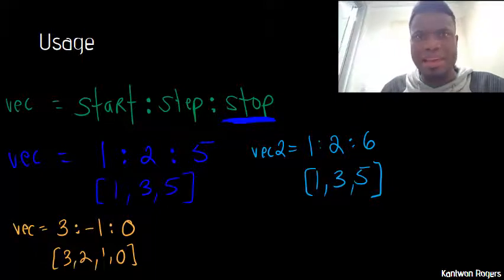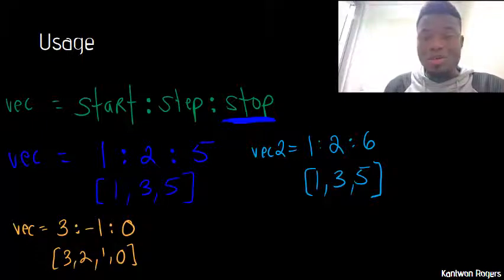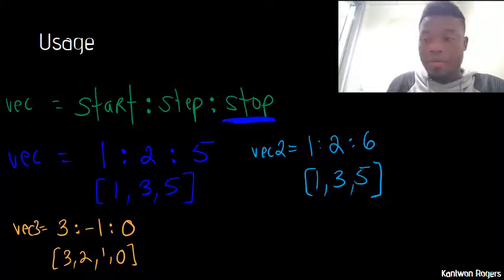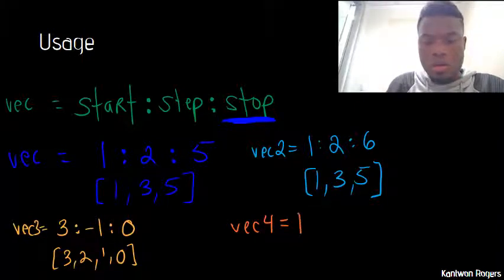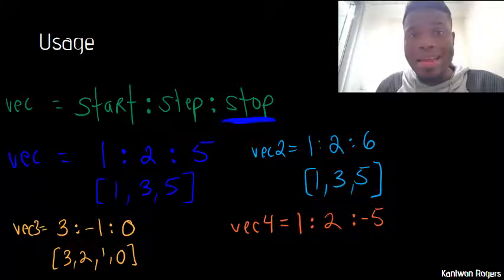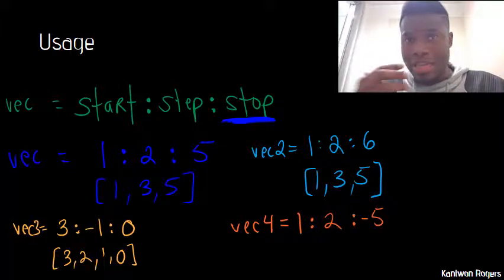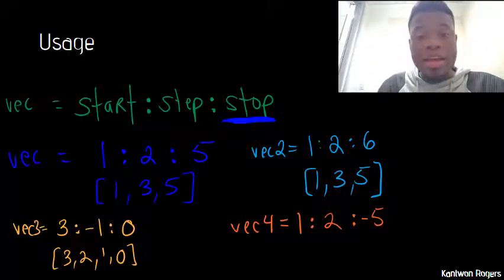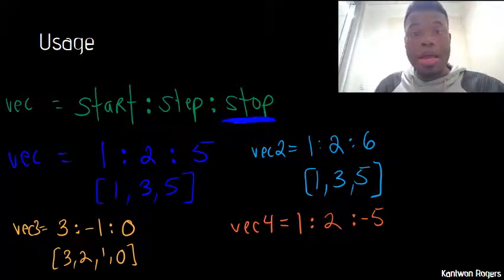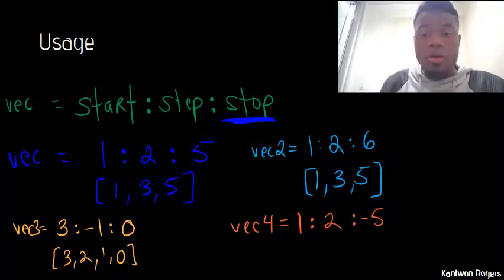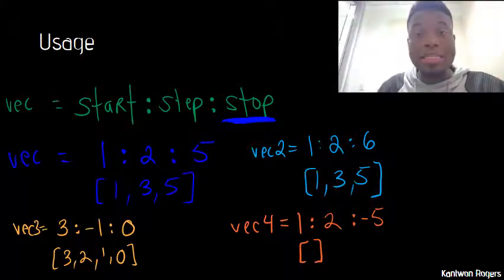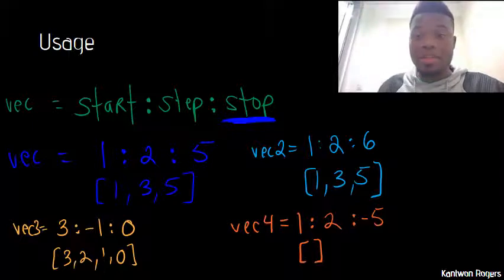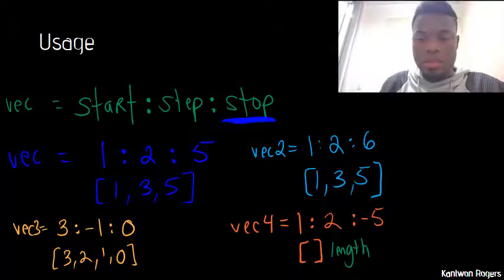And lastly, what if we try to have MATLAB do the impossible? What happens then? Let's say I asked MATLAB to do something like this. Go from one steps of two down to negative five. So there's no way that I can start with one, go in positive steps of two and end at a number that's less than one. So therefore, when you try to do something like this, when you try to use the colon operator and do the impossible, it's not going to error. What it's going to do is it's going to produce back an empty vector. So when you try to tell MATLAB to do something that it can't do, it gives you back an empty vector and the length of that is zero.